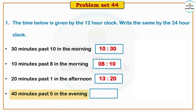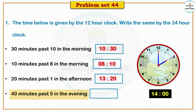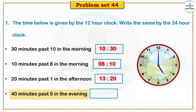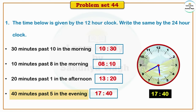Next is 40 minutes past 5 in the evening. We know that after 12 noon in the 24-hour clock: 1 = 13, 2 = 14, 3 = 15, 4 = 16, 5 = 17. The given time is 5 o'clock and 40 minutes — so in the 12-hour clock it is shown as 40 minutes past 5, and in the 24-hour clock it is shown as 17.40.